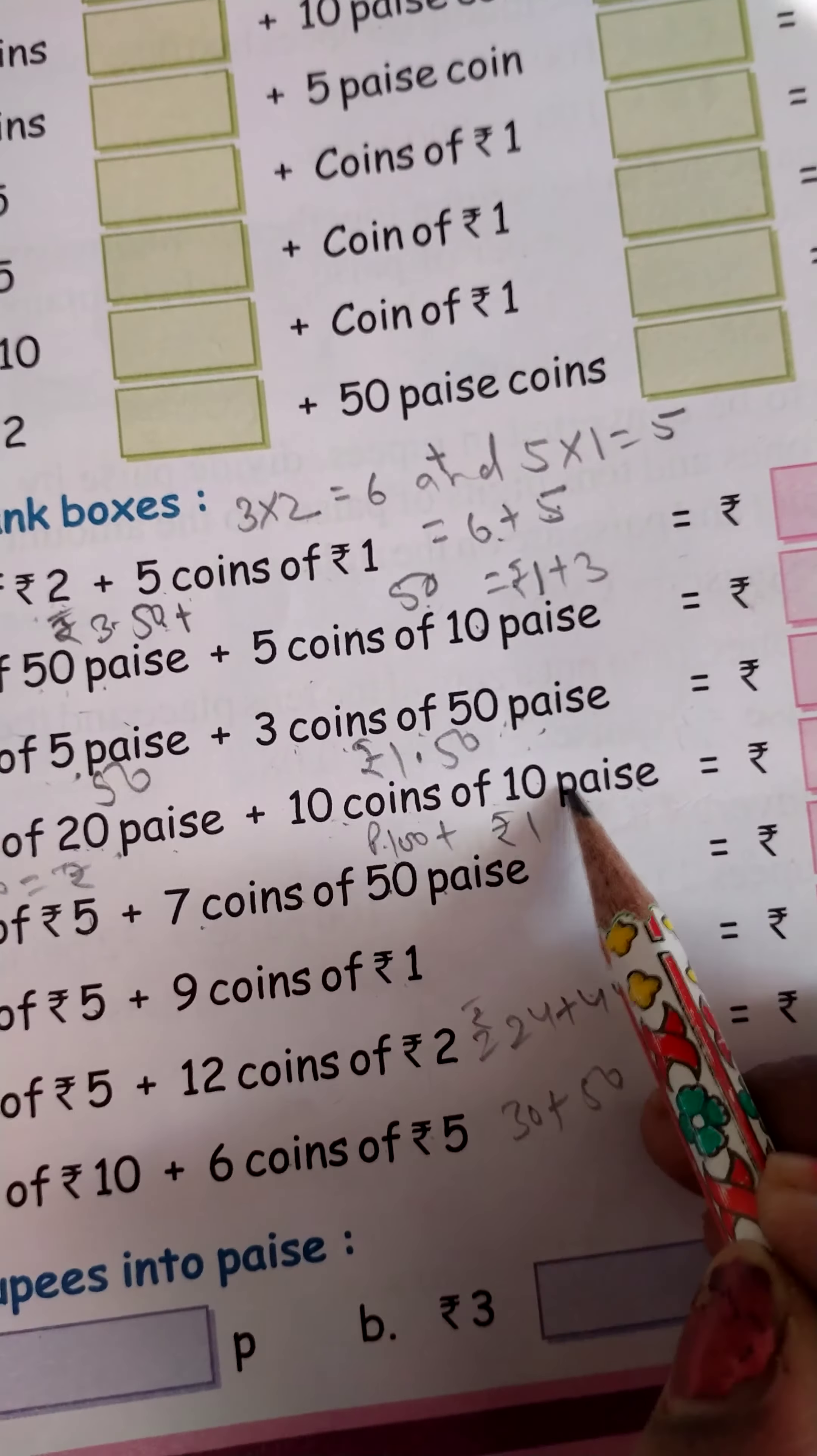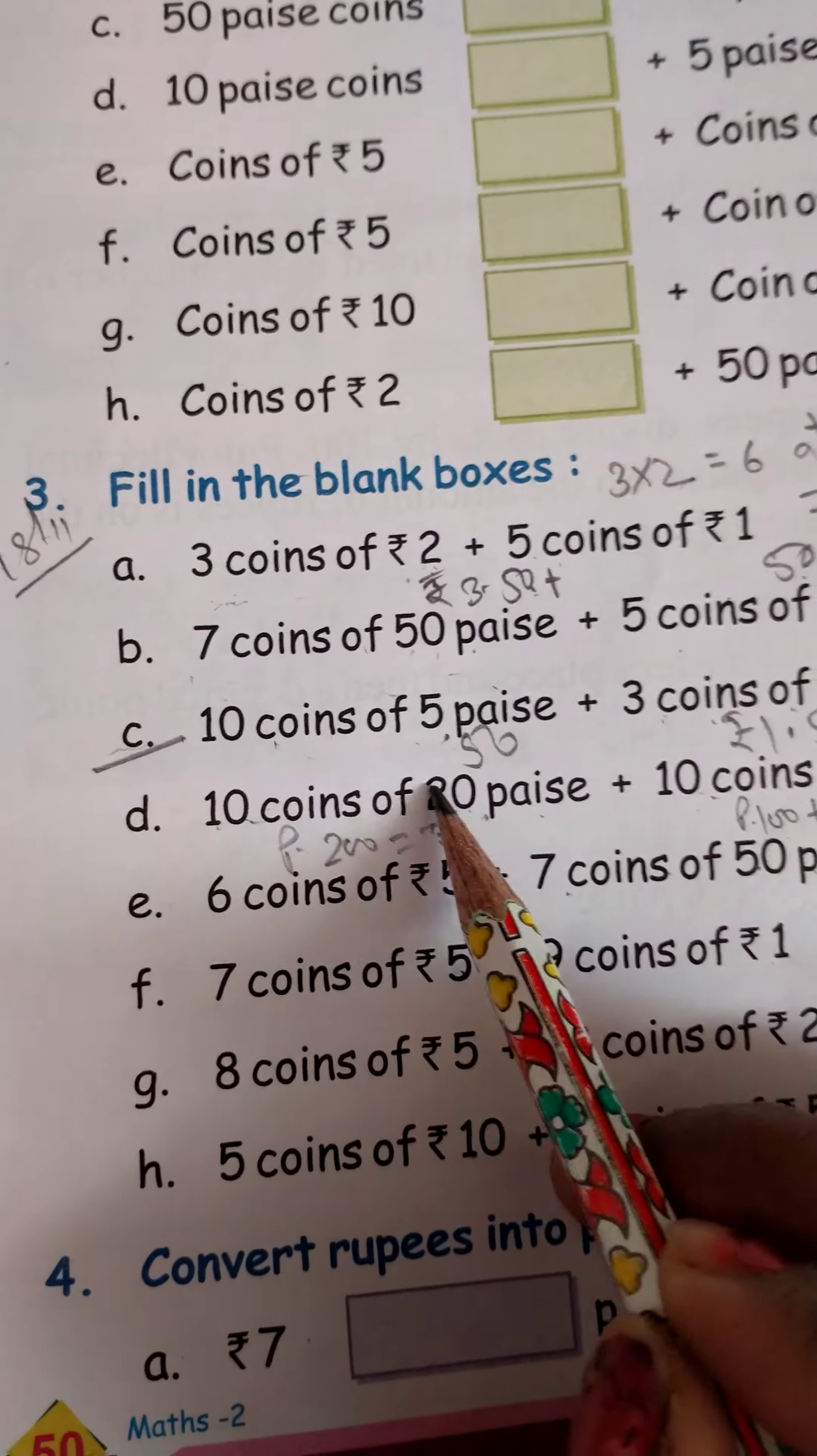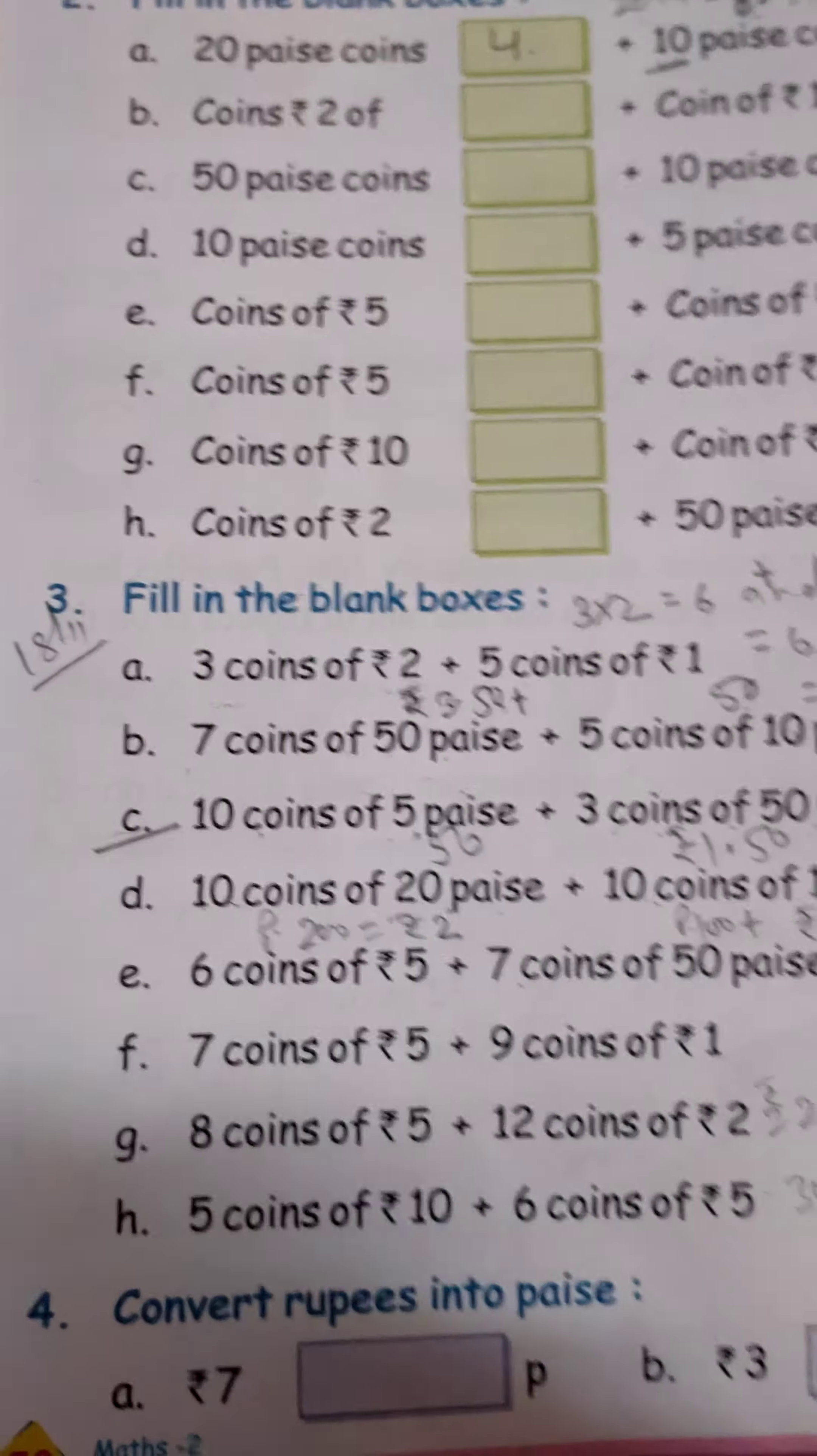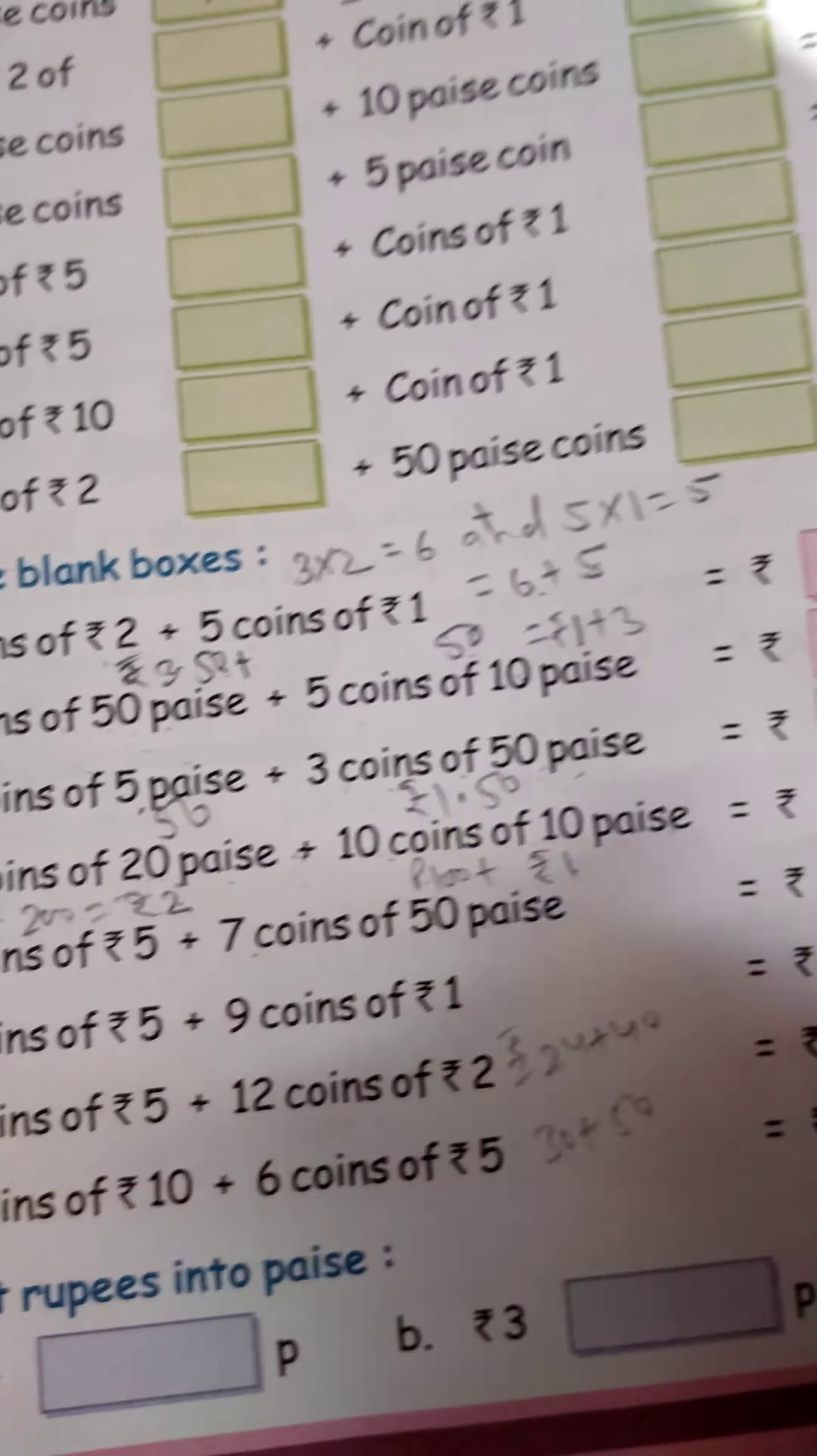And 10 coins of 10 paise, so 20 multiplied by 10 equals 200, which is 200 paise. So 200 paise is what? 2 rupees. So rupees 2 plus rupees 1 is equal to rupees 3.